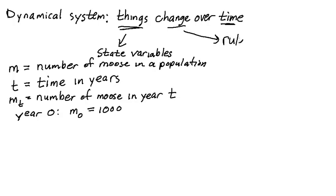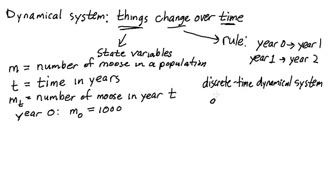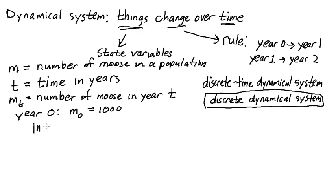once a year, our model of how the moose population changes over time will be a model of going from one snapshot to another. We'll need a rule for how to go from, let's say, the population in year zero to the population in year one, and from population in year one to year two, etc. We'll have to have a rule for all these transitions. Now since we are using discrete time steps, the resulting dynamical system is a discrete time dynamical system. But since that's too many words for me, I usually just call it a discrete dynamical system, with it being understood that time is what's discrete. To come up with a rule for how the